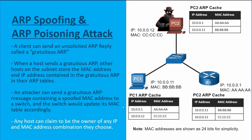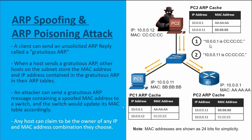Here in our graphic, we've got PC1, PC2, and R1. They all have ARP caches that are up-to-date and correct. But what's going to happen is PC2, the threat actor, is going to send out a gratuitous ARP claiming that 100.1 — the IP address of the router — is reachable by using MAC address all-C's, which is the MAC address of the threat actor.